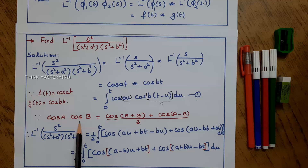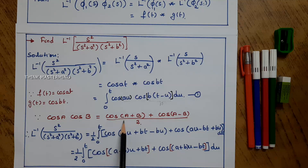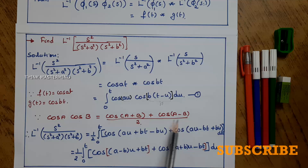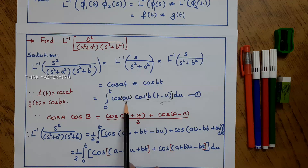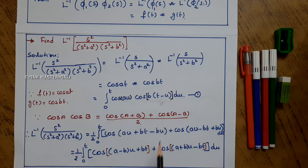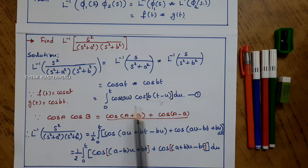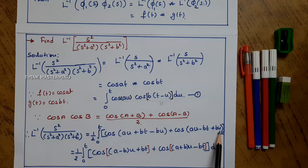Using the trigonometric formula cos(a)cos(b) equals cos(a plus b) divided by 2 plus cos(a minus b) divided by 2, the expression can be written as one-half times the integral from 0 to t of cos(au plus bt minus bu) plus cos(au minus bt plus bu).